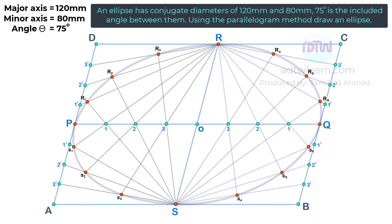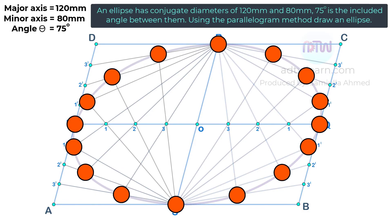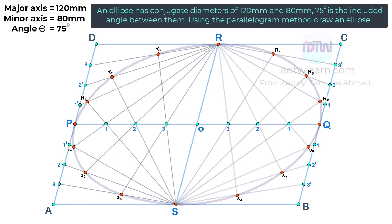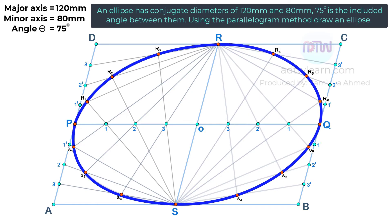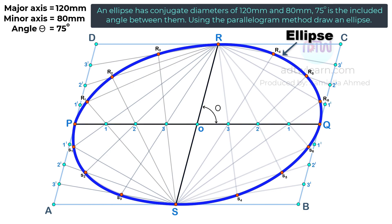To get an ellipse, we have to join all these points. Draw curves using a French curve. This is our final ellipse. We can see that the ellipse by parallelogram method is similar to that of an ellipse by rectangle method — the only difference is that there is an included angle between the axes. I hope you have understood how to draw an ellipse by the parallelogram method.